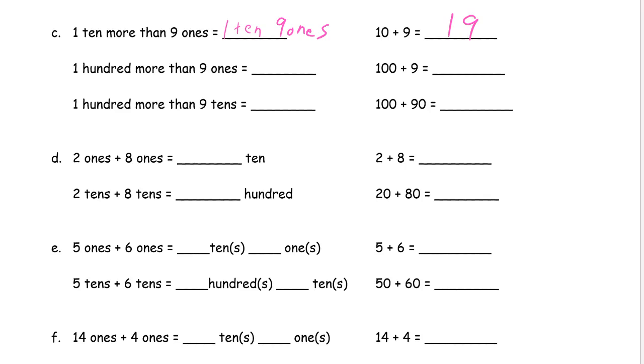One hundred more than nine ones equals one hundred nine ones. One hundred more than nine tens is one hundred nine tens, which is one hundred ninety.